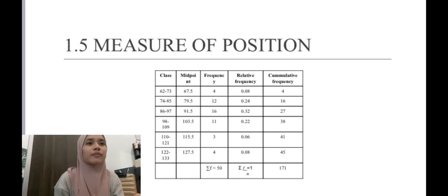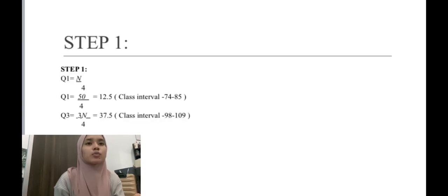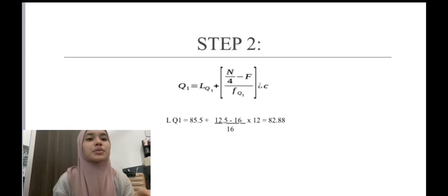After I found all the data in the table, I go to step one. Step one: we must find Q1 and Q3. Q1 formula is N divided by 4, so Q1 equals 50 divided by 4. The answer is 12.5, so the class interval is 74 to 85. Q3 is 3N divided by 4, the answer is 37.5, so the class interval is 98 to 109.